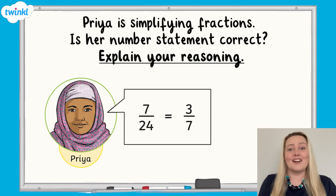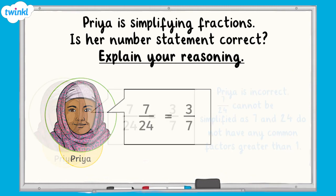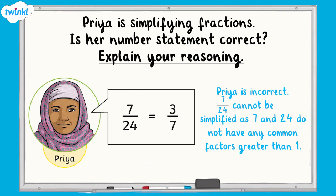Have you got an answer? Fantastic. Because 7 and 24 do not have any common factors greater than 1, the fraction is already in its simplest form. So, Priya is not correct.